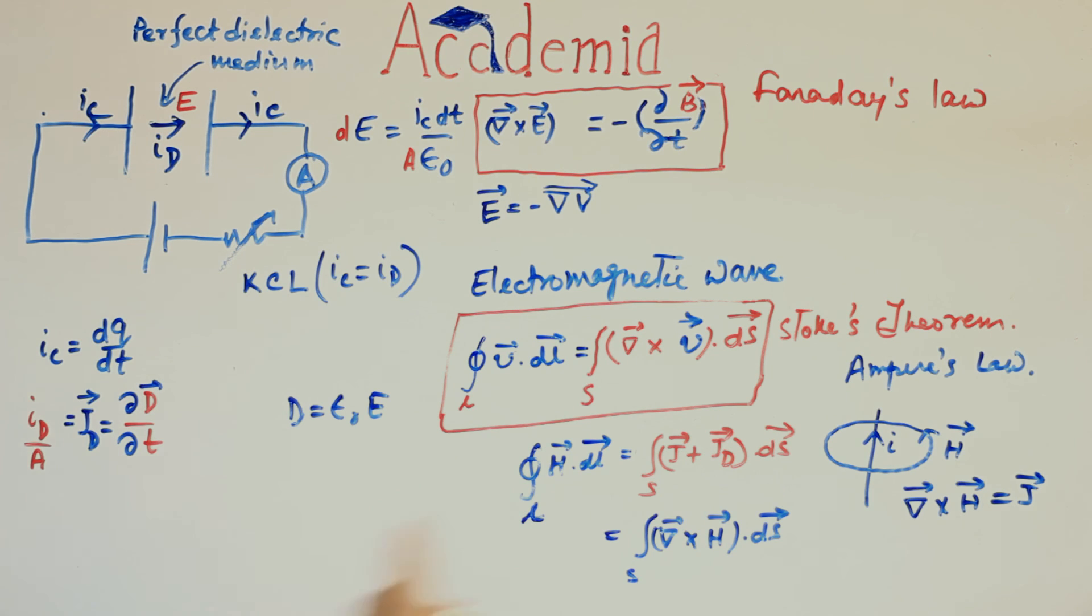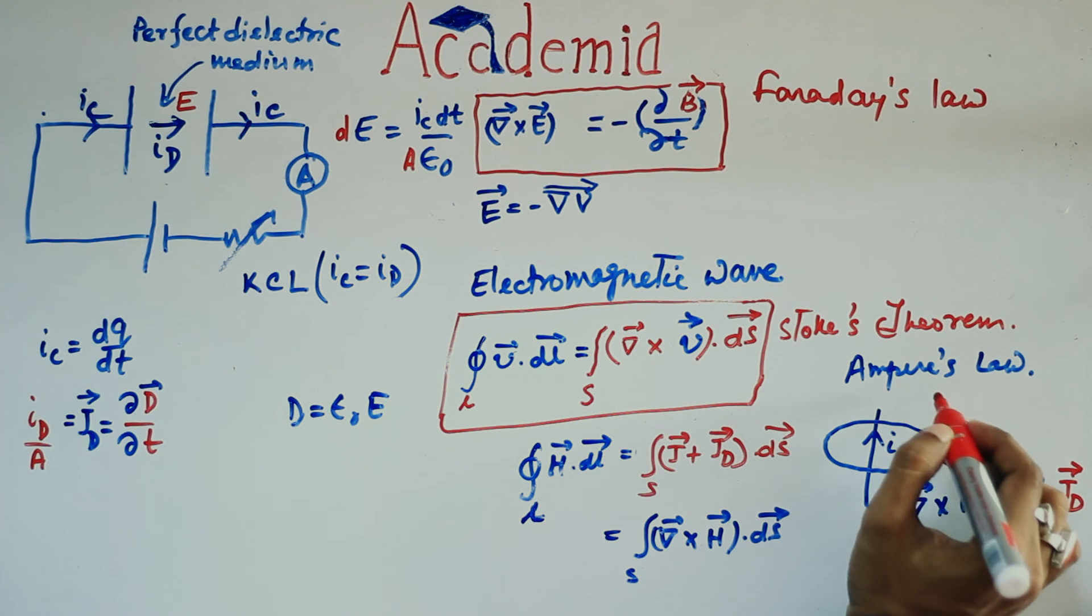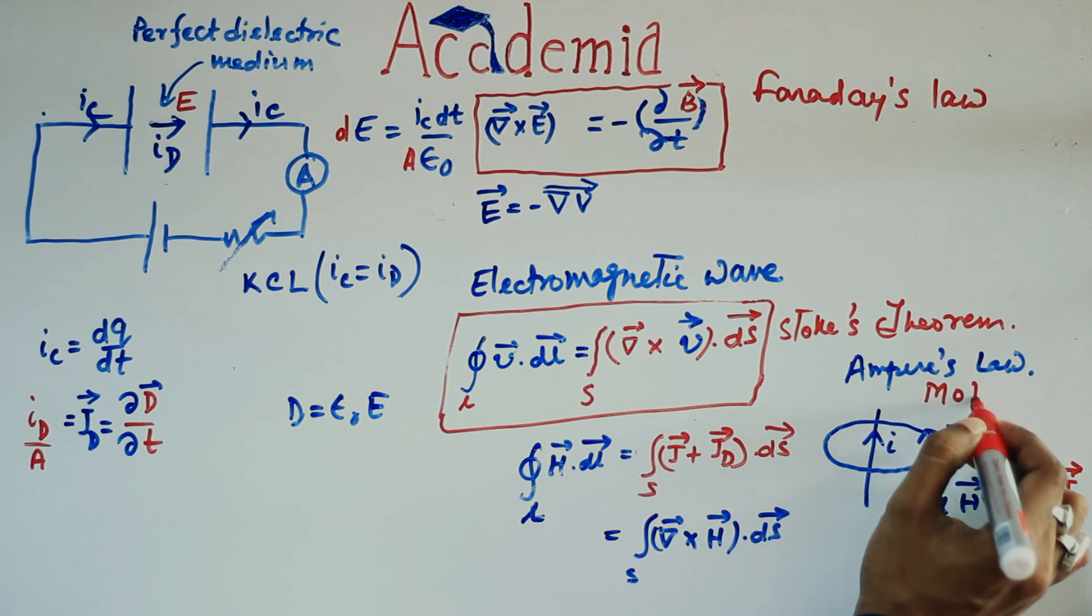Now, by comparing these two, we get curl of H equals to J plus JD, where JD has been calculated as del D del T. This is modified Ampere's law. With this modification, Maxwell introduced his four equations of electromagnetism.